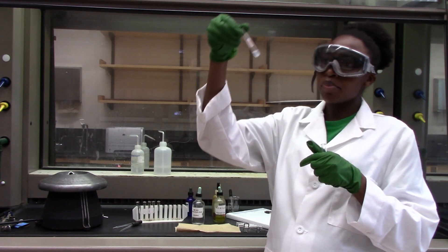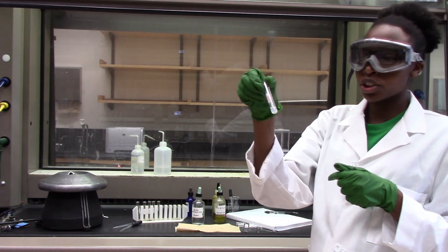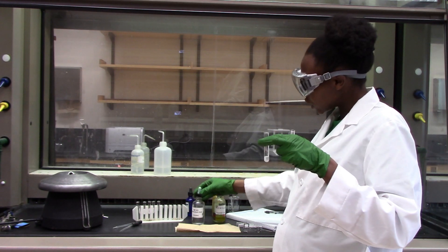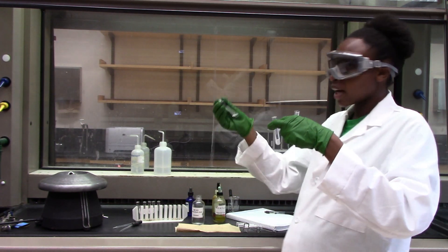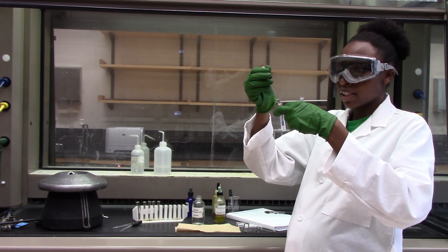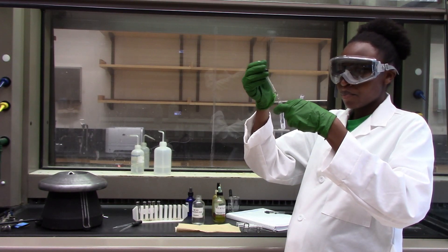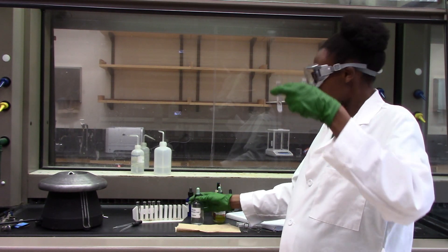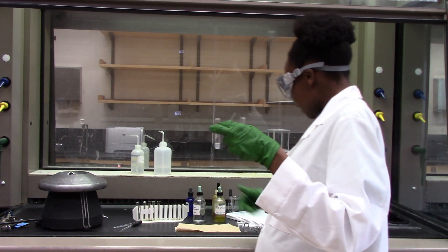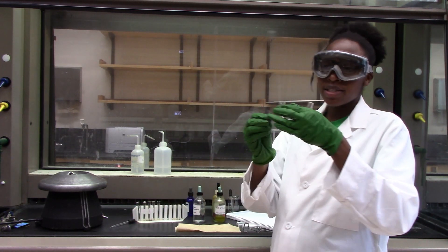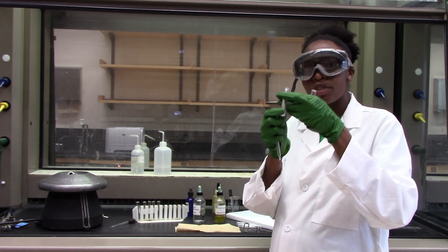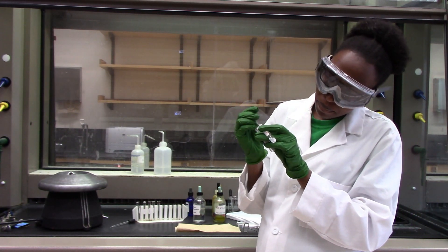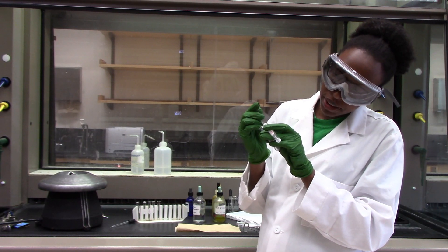At this point I have all my precipitate at the bottom and I am going to add one more drop of HCL just to make sure that none of the silver group cations are still in my supernatant. As you can see, it's clear and with this I am going to carefully take out the supernatant and leave my precipitate in the test tube.